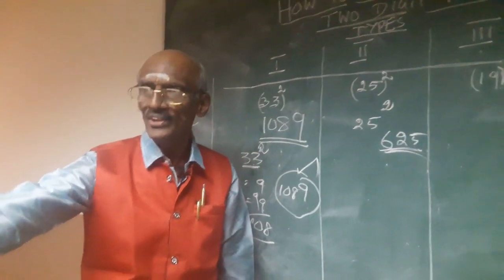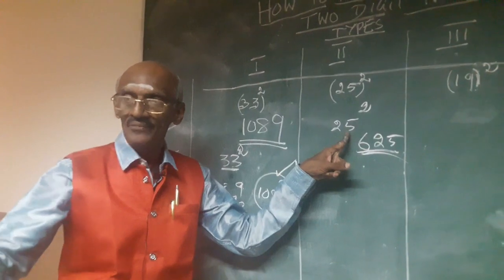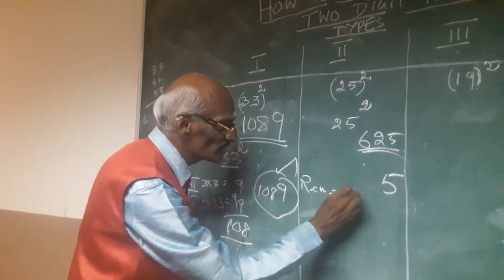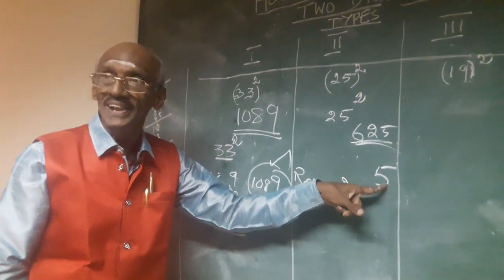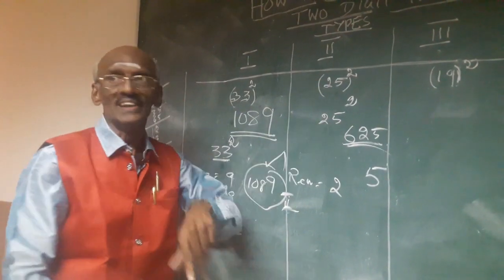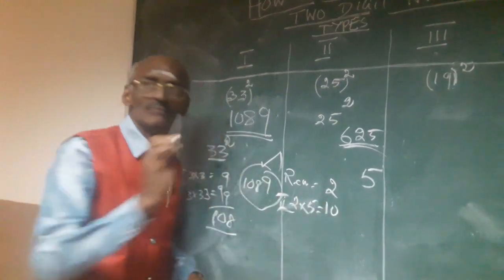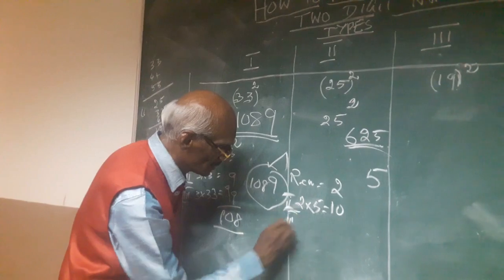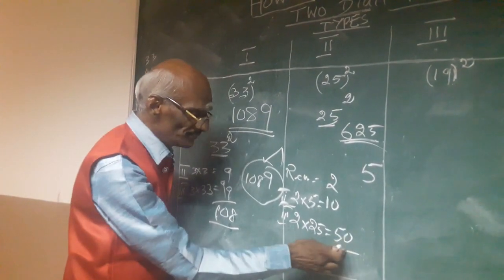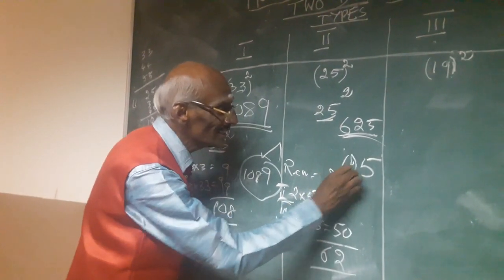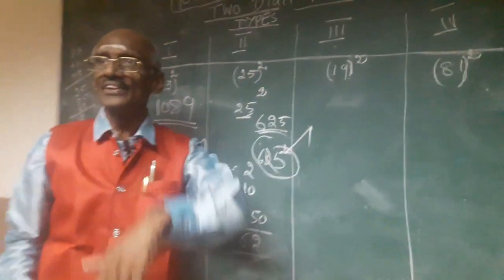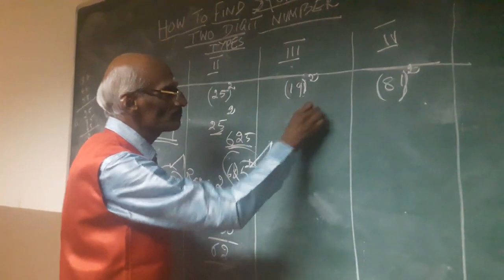Now let us take 25 squared. Step one: take the last digit, 5. Five into five equals 25. Write the 5 here; the remainder is 2. Step two: multiply the first digit by the second digit — 2 into 5 equals 10. Step three: take the first digit 2 and multiply by the two-digit number 25 — 2 into 25 equals 50. Find the total: 50 plus 10 equals 60, plus 2 (remainder) equals 62. So 25 squared equals 625.